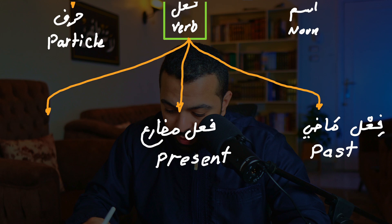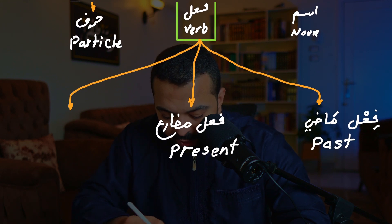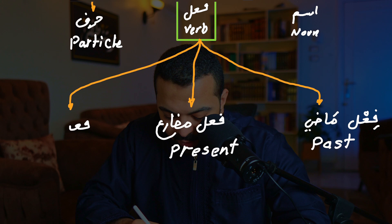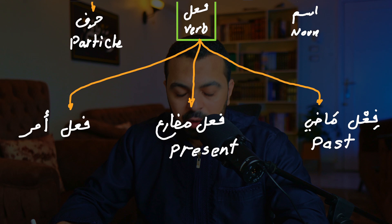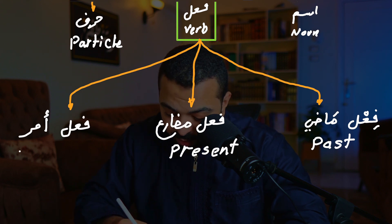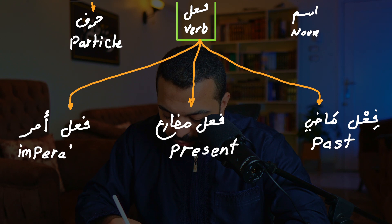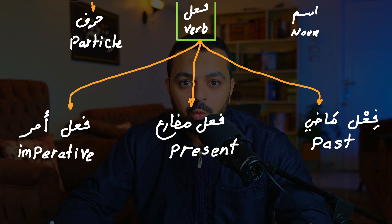And we have something called فعل أمر. What does فعل أمر mean? It means imperative verbs — when you give an order to someone.